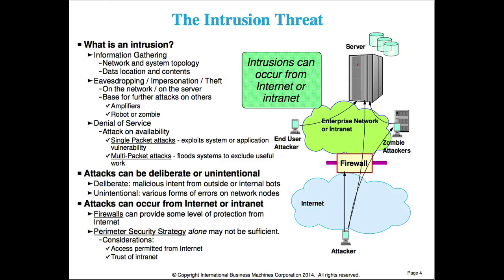The attack can be deliberate, but it could also be unintentional — for example, errors in network nodes that end up causing some sort of a denial of service attack. Attacks can occur from the internet, but they can also originate from the intranet. The firewall providing your perimeter security may not be sufficient if there are concerns with intranet attacks as well as internet.